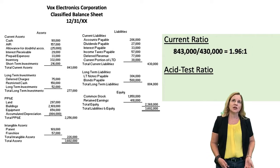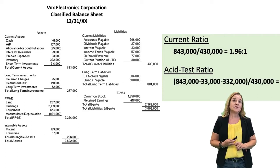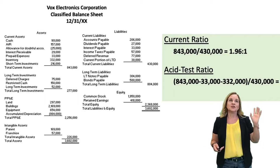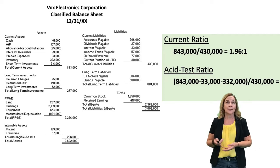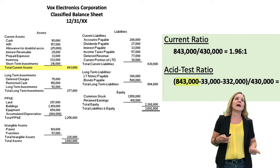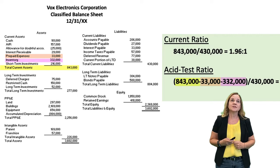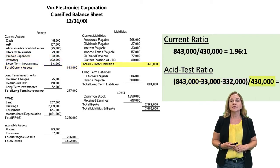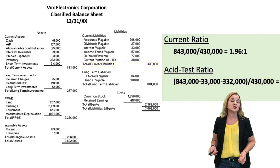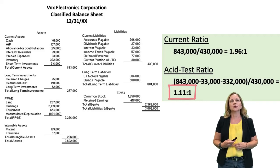Then for the acid test ratio, we take cash, short-term investments, and receivables. In this example, I've taken the current asset amount of $843,000 and subtracted out $33,000 for prepaids and $332,000 for inventory. There were no supplies on this balance sheet, but if there were, I would have subtracted those as well. Divided by current liabilities of $430,000, the quick ratio is 1.11 to 1 — so we have a little bit more current assets than current liabilities.